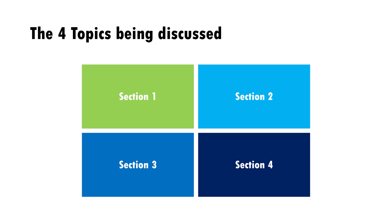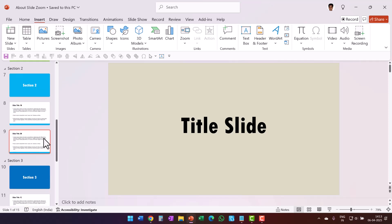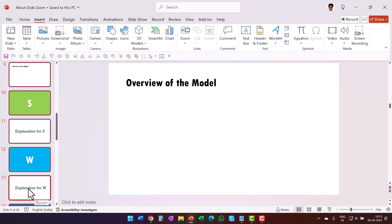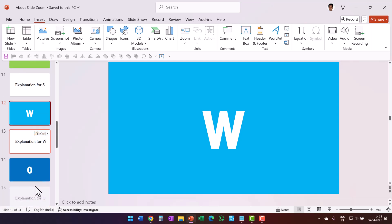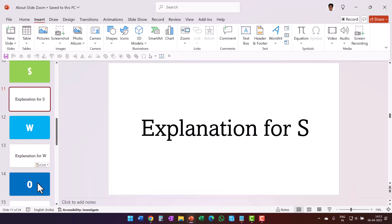Now let me show you how I use Slide Zoom to present models. Let's say I have a set of slides for a SWOT analysis of a certain company, and I want to introduce those slides in section 2. I've already got the set of slides — I changed the slide background and used a single text box to create the S, W, O, T slides — and these are the explanation slides for each of the individual characters shown here.